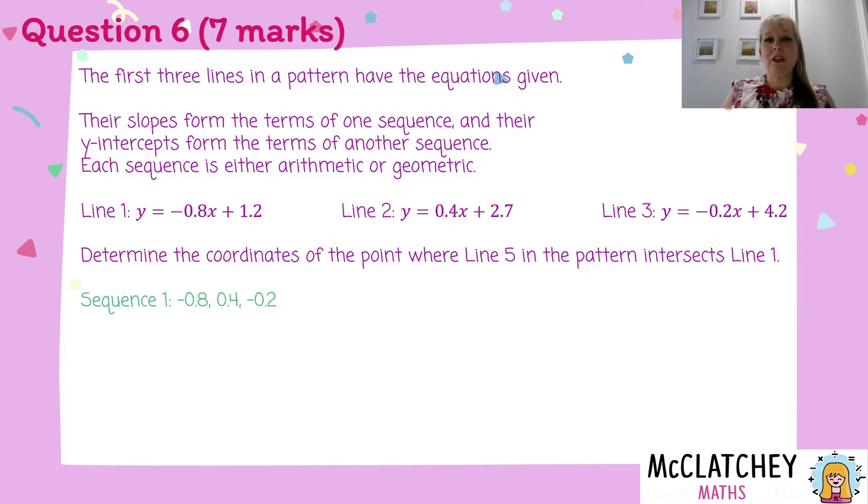What we're going to do is we're going to take the gradients or the slopes from each of those. So remember, y equals mx plus c. The coefficient of x in each of these is our gradient or our slope. So we're going to take negative 0.8, positive 0.4, and negative 0.2 from our next line, and we're going to make our first sequence out of those three points.